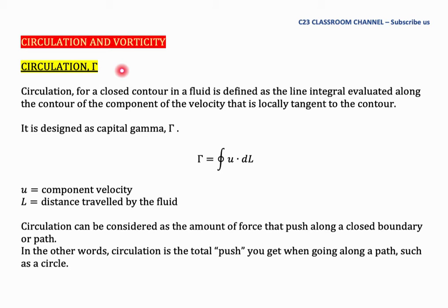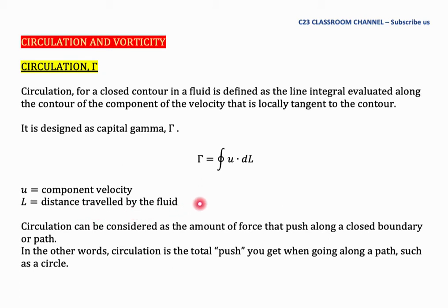...the line integral evaluated along the contour of the components of the velocity that is locally tangent to the contour. It is designated as capital gamma, and the equation can be written as: gamma equals the integral of u times dl, where u is the component velocity and l is the distance traveled by the fluid. Circulation can be considered as the amount of force that pushes along a closed boundary or path.